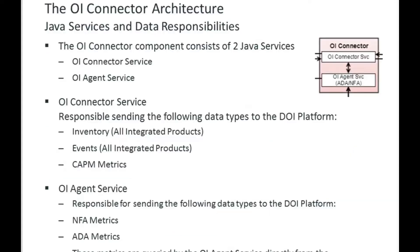The OI Connector itself consists of two Java services: the core OI Connector service and a second service called the OI Agent service. We'll talk briefly about each of those.